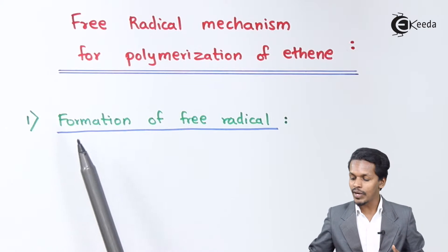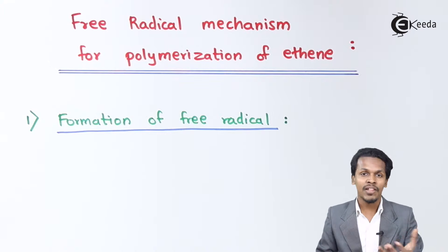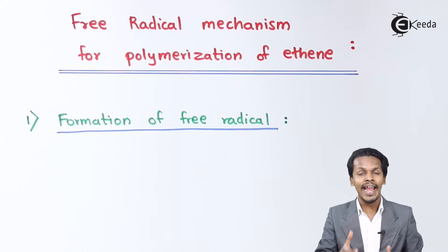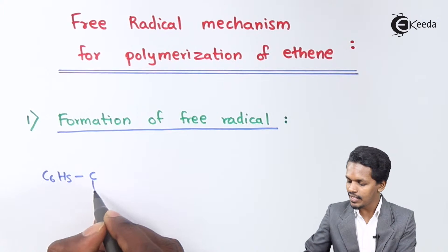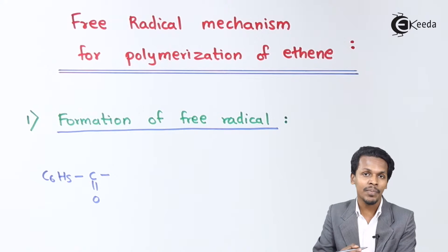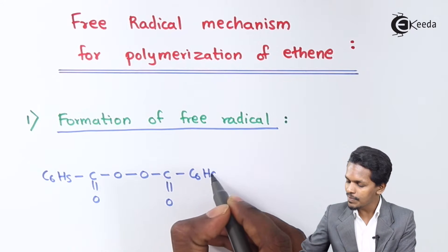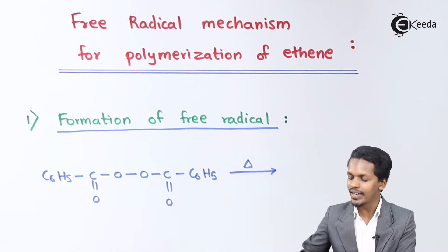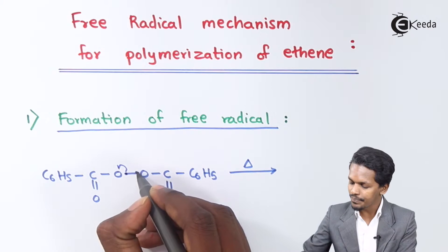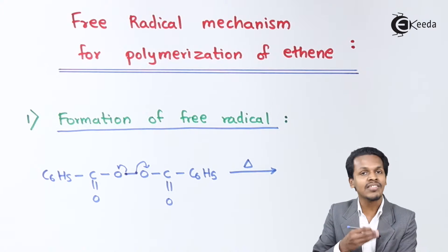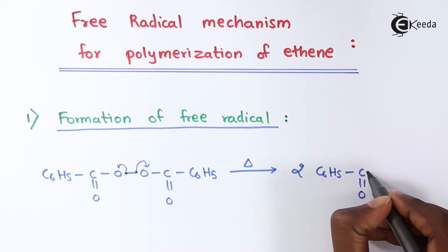The first step is the formation of free radicals. Here we consider one of the initiators, which is benzoyl peroxide (C6H5-C=O-O-O-C=O-C6H5). Whenever benzoyl peroxide is provided a certain temperature or heat, since it is an unstable compound, it forms a particular radical. The product we get is two moles of C6H5-C(=O)-O•, through homolytic fission.